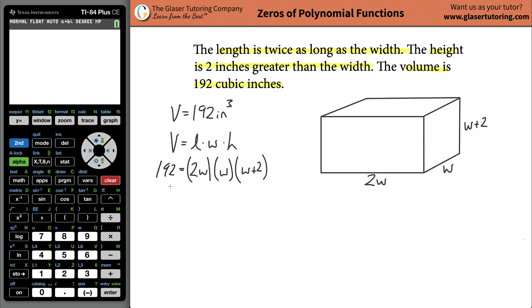This is a little bit complicated. I want to distribute these terms together, probably a cubic function. We've got 2w times w, so that's 2w squared. Then multiply that by w plus 2. That's 192 equals 2w squared times w, which is 2w cubed, and then 2w squared times 2 is 4w squared.